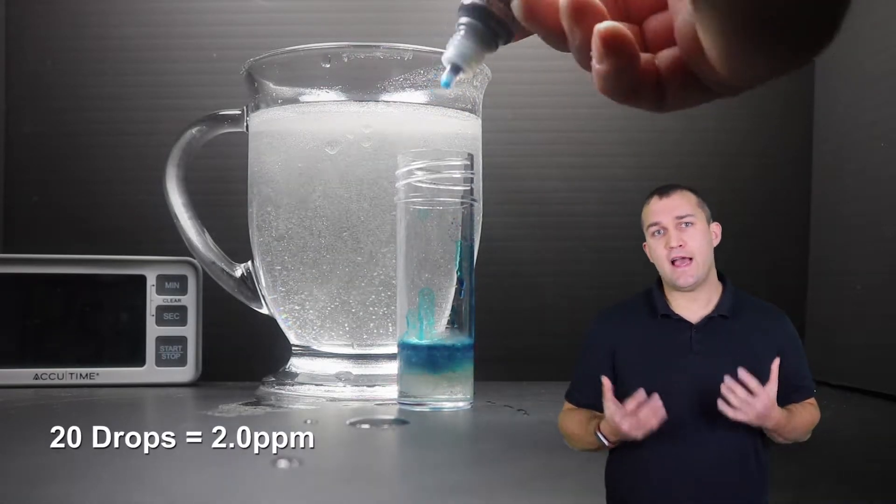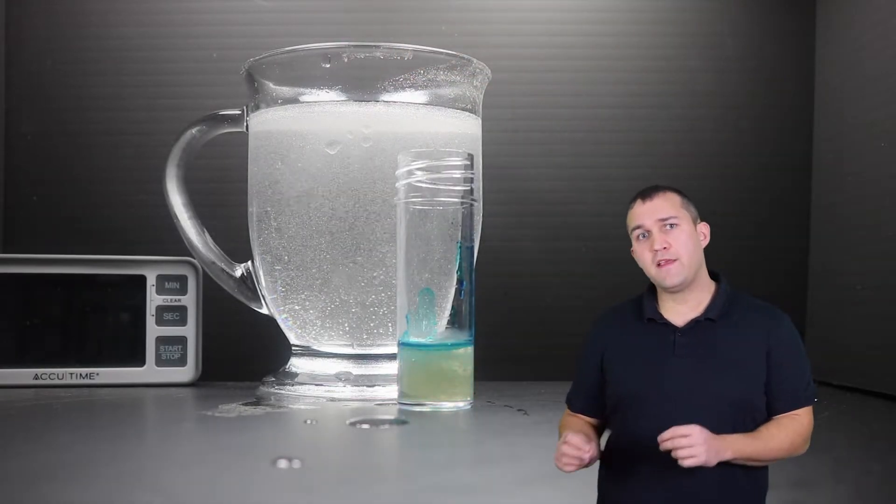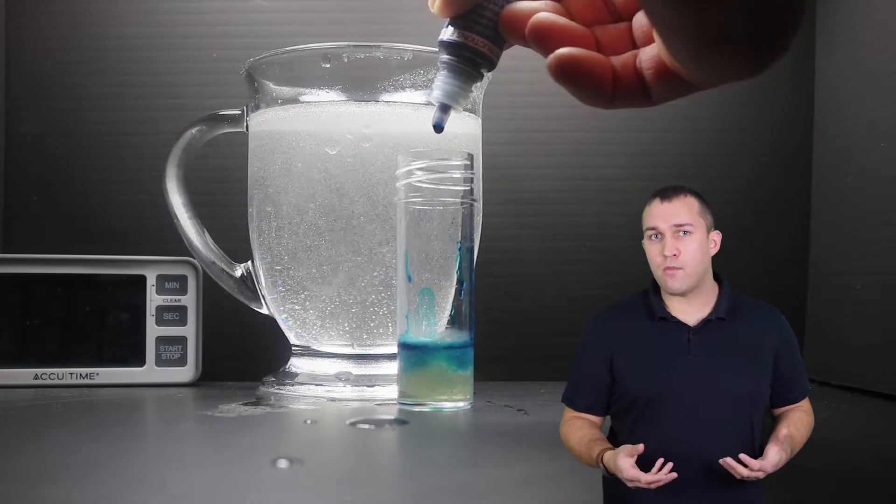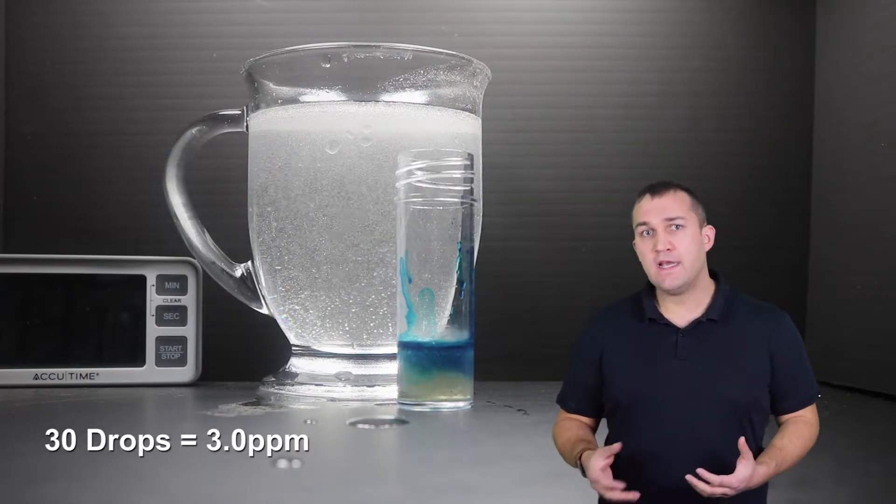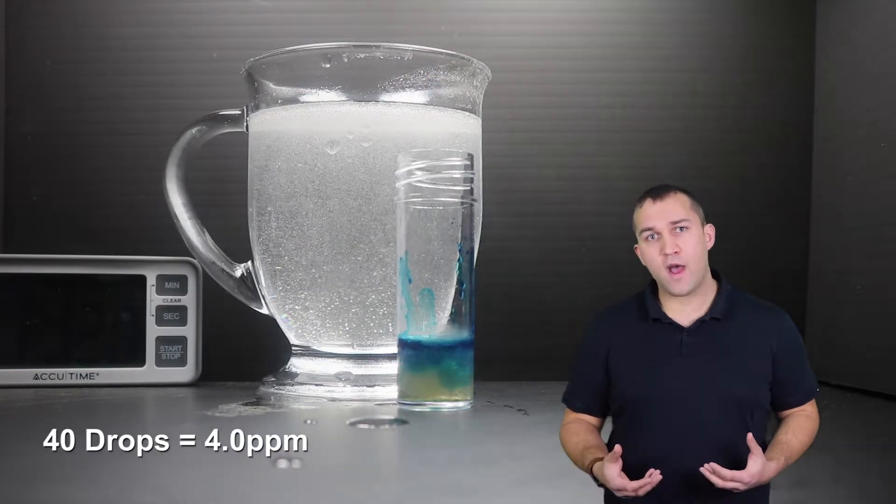Leading ionizers and hydrogen machines on the market make about 0.1 parts per million of hydrogen. If they're a great model, maybe one part per million. Packaged hydrogen water in pouches is typically below one part per million as well.